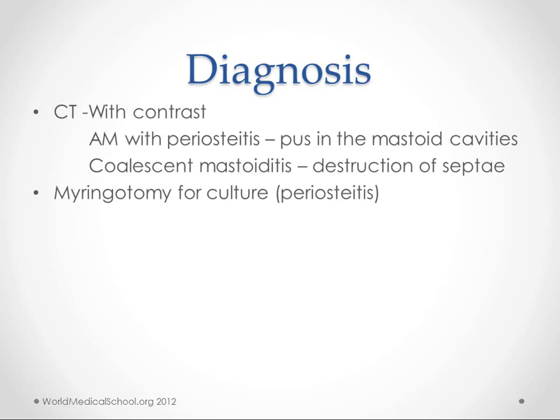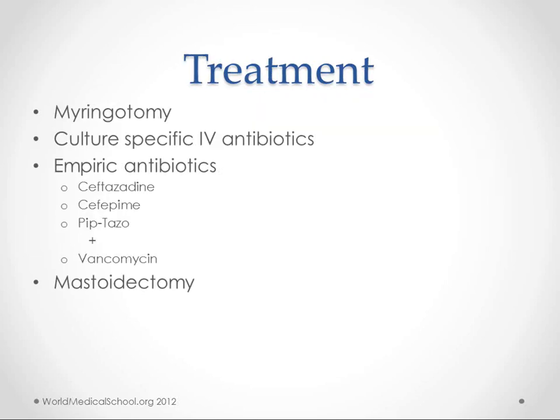In either case, you can perform myringotomy for culture, which helps determine which antibiotics to use. If no specimen is available, use broad-spectrum coverage: ceftazidime, cefepime, or piperacillin-tazobactam — all cover Pseudomonas, which is on our list of causative agents. Add vancomycin for methicillin-resistant Staph. Mastoidectomy may also be needed to drain purulent fluid, depending on the severity of the case.